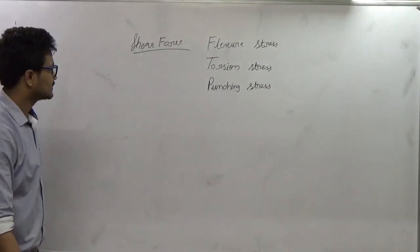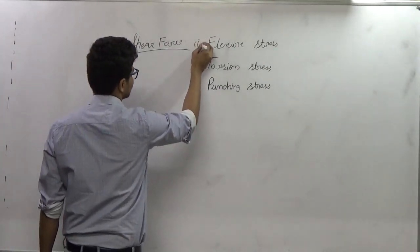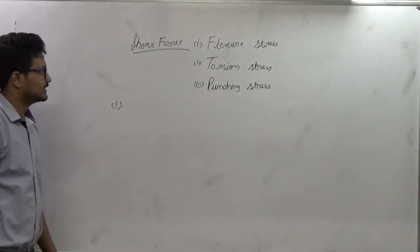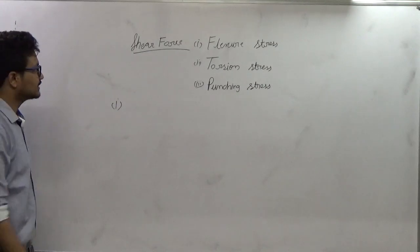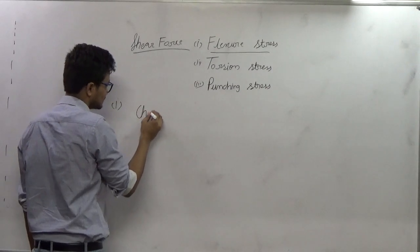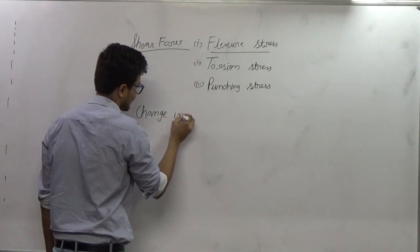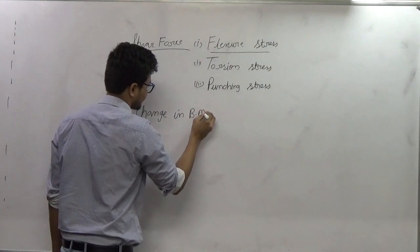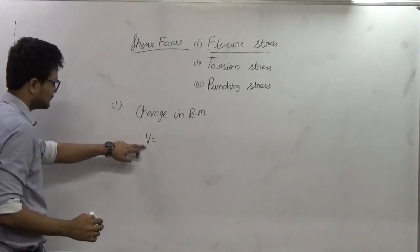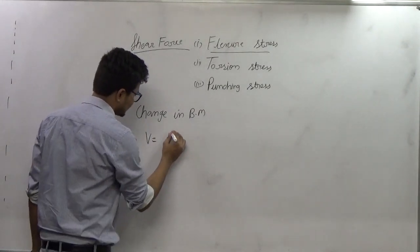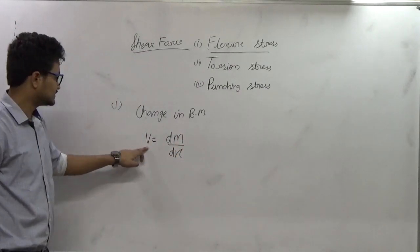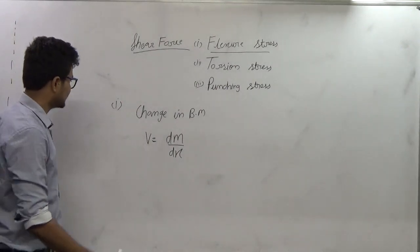Now, if you look at the flexural stress, this we have already seen in the strength of materials topic. Flexural stress is developed due to the change in bending moment, and it is given by V = dM/dx — that is, the shear force due to the changing bending moment is given by dM/dx. The stress corresponding to this shear force is known as flexural stress.